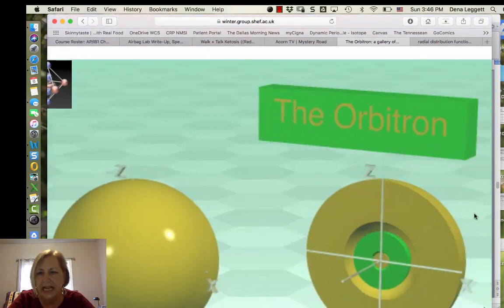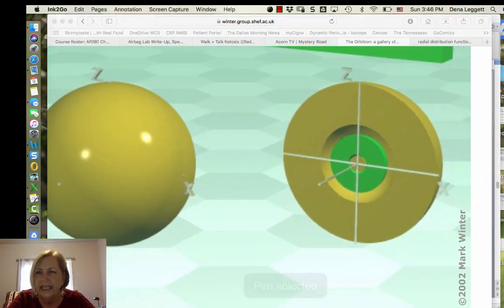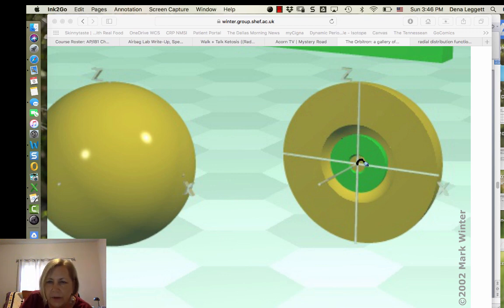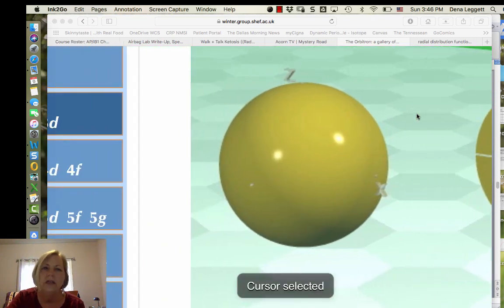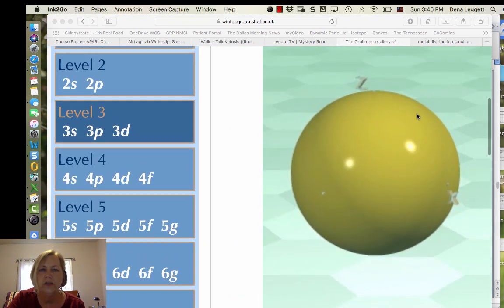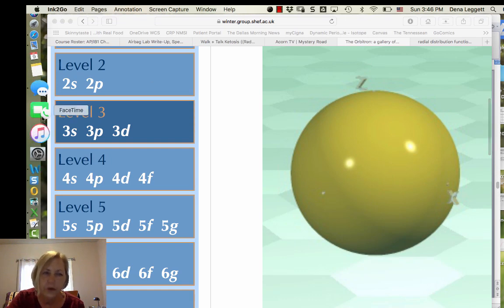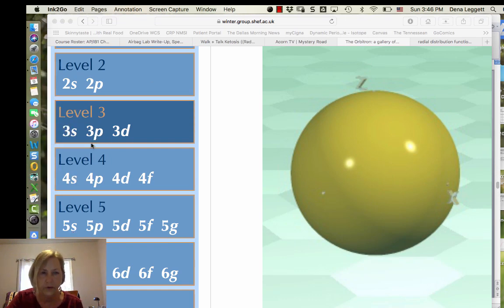You see the 3s has two nodes. And so if you looked at its radial distribution function, there's a tiny probability and a little bit more probability and then a lot of probability further away from the nucleus. And you would have two nodes, two regions in space where there's a zero probability of finding that electron. All right, and 4s would have four nodes, five would have, or excuse me, 4s would have three nodes, five would have four and so forth.